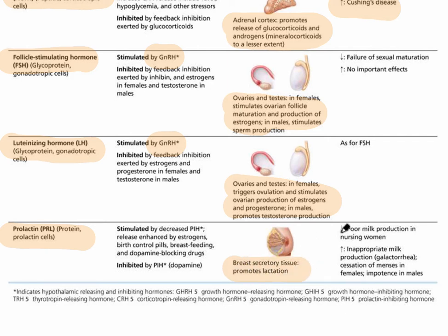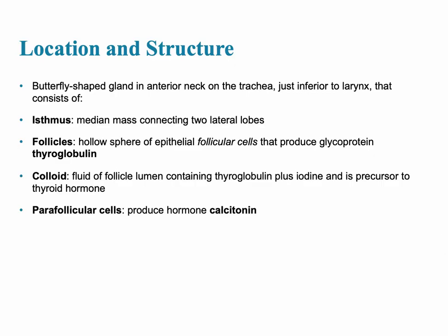The last of the anterior pituitary hormones is prolactin. Its target tissue is the breast, and it promotes lactation. The homeostatic imbalances associated with prolactin are also noted.